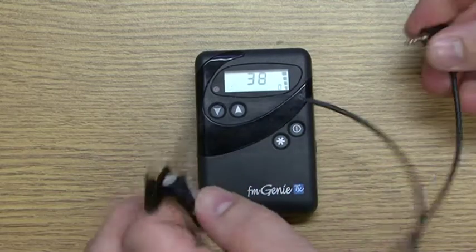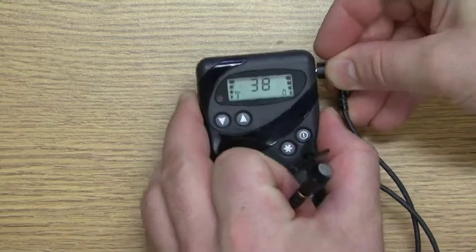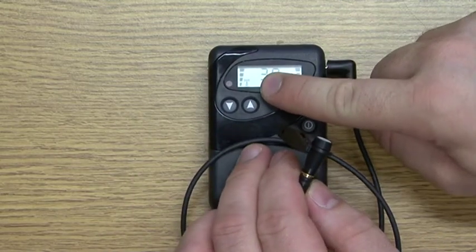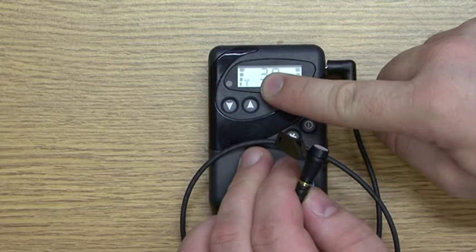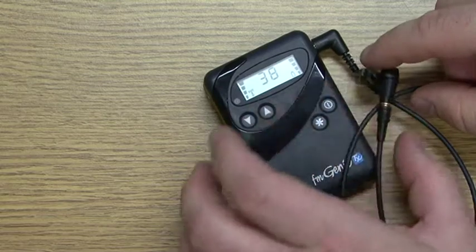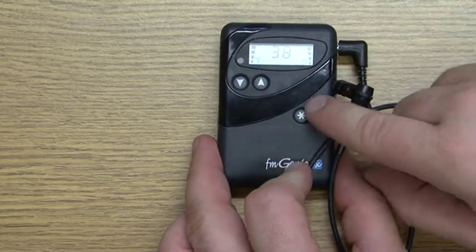Connect the lapel microphone. The antenna signal on the screen displays four bars and the red LED will stop, indicating a good connection. Turn the transmitter off.